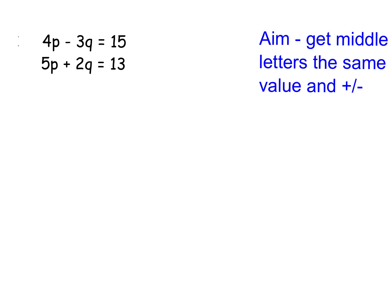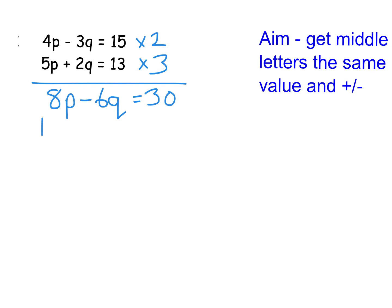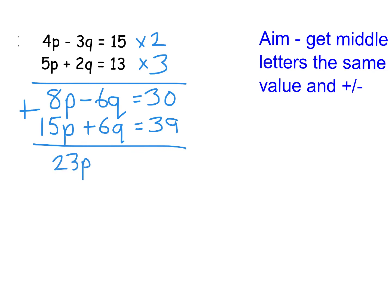Now the scenario where we have to change two equations. I've got a minus 3q and a plus 2q, so I have the plus and minus, but I need to think about what I can turn 3 and 2 into — it comes back to lowest common multiples. The lowest common multiple of 3 and 2 is 6. So I times the top equation by 2, giving 8p minus 6q equals 30, and the bottom equation by 3, giving 15p plus 6q equals 39. Adding them: 8 add 15 is 23p, the 6q's disappear, and 30 add 39 is 69. So 69 divided by 23 gives p equals 3.